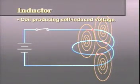Because of its ability to produce self-induced voltage, a coil of wire is called an inductor. An inductor, therefore, can be defined as a coil producing self-induced voltage.